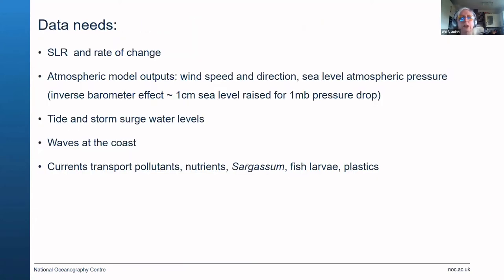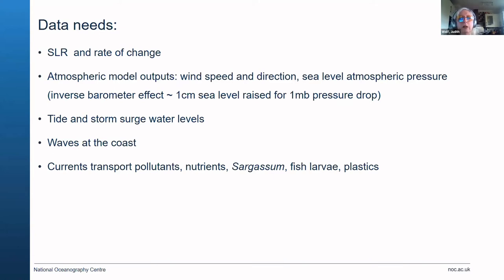What are the data needs? These are absolutes — sea level rise and the rate of change of sea level rise. We need atmospheric model outputs: wind speed and direction, sea level atmospheric pressure, which generates the inverse barometer effect — one centimetre of sea level is raised for every one millibar of pressure drop. A storm with central pressure of 930 millibars will generate a surge of as much as 80 centimetres. We also need to record and model tide and storm surge water levels, waves at the coast, and currents — which transport pollutants, nutrients, plastics, sargassum, and more.